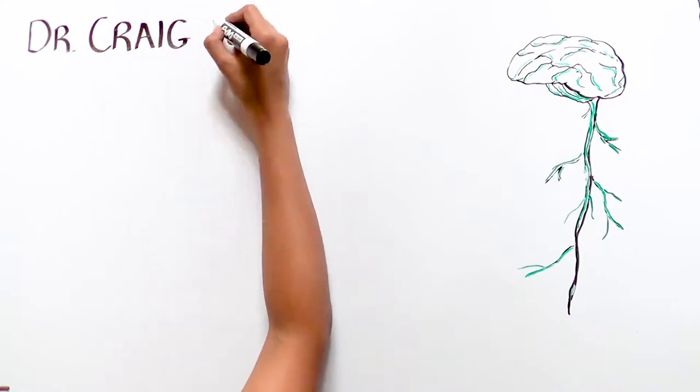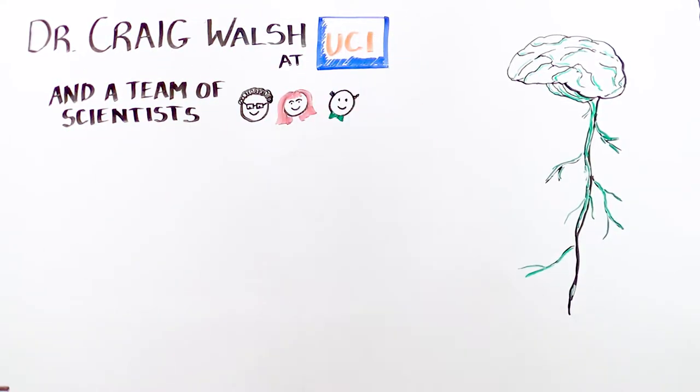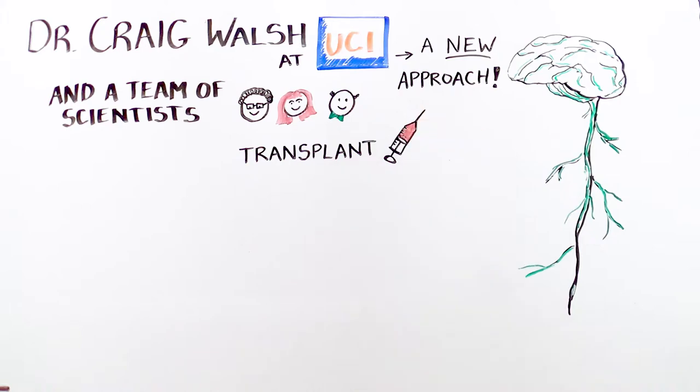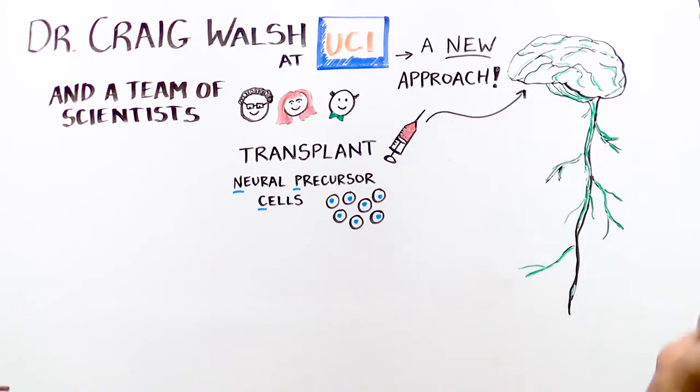A collaboration of scientists led by Dr. Craig Walsh from UC Irvine are taking a new approach to treating MS, a regenerative approach. Their strategy involves transplanting a type of cell called neural precursor cell, NPC, into the brain and spinal cord.